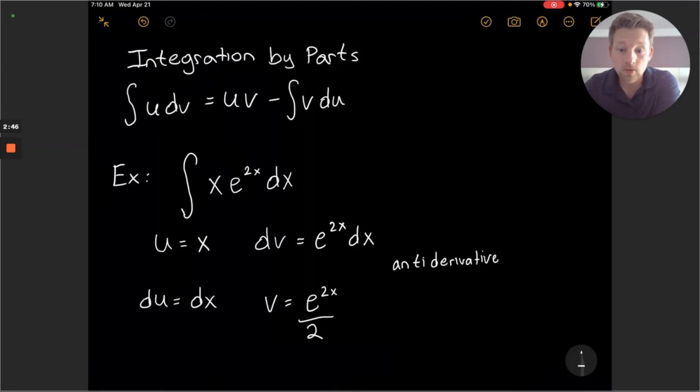If you want to double check you can take the derivative of this v function. If you wanted to pause this video right now, take a look at that derivative and you should find that gets us back to the dv function. So here we have our four components.